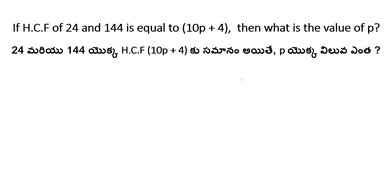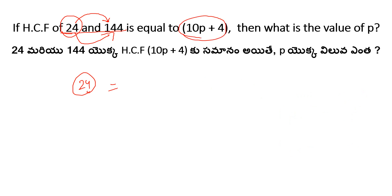So 24 equals 10p plus 4. Solving: 10p equals 24 minus 4 equals 20, so P equals 2. This means 10 times 2 equals 20, plus 4 equals 24. Therefore P value equals 2.